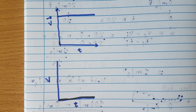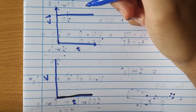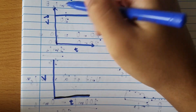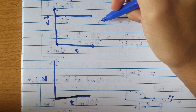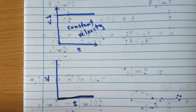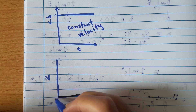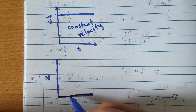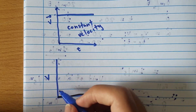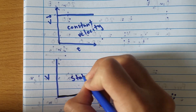Here we have two more velocity-time graphs. In the first, for every change in time there's no increase in velocity — it's a straight horizontal line — so this represents constant velocity. In the second, the line sits at the zero line, meaning for every change in time there is no velocity at all. We can say the object is stationary.